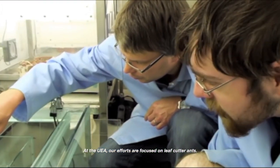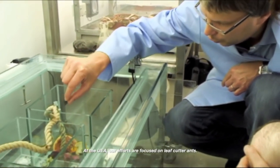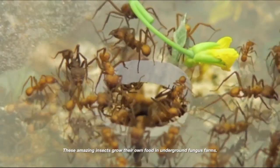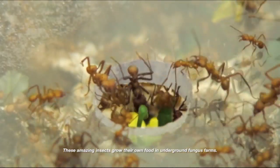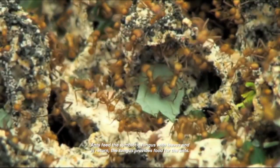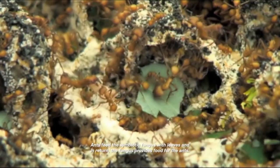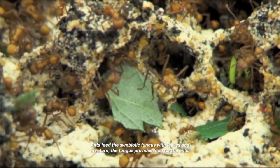At UEA, our efforts are focused on leafcutter ants. These amazing insects grow their own food in underground fungus farms. Ants feed the symbiotic fungus with leaves and in return, the fungus provides food for the ants.